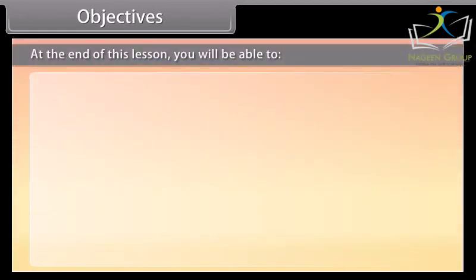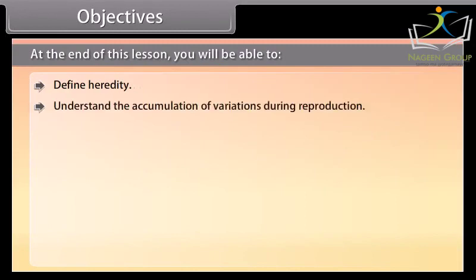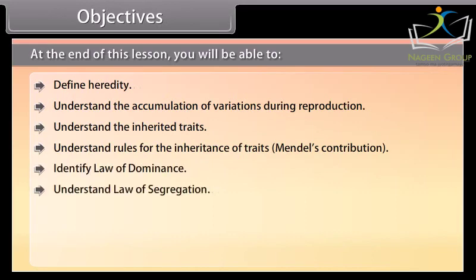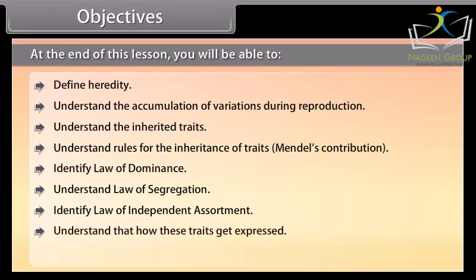At the end of this lesson, you will be able to: define heredity; understand the accumulation of variations during reproduction; understand inherited traits; understand rules for the inheritance of traits and Mendel's contribution; identify the law of dominance; understand the law of segregation; identify the law of independent assortment; understand how these traits get expressed; and understand the process of sex determination.